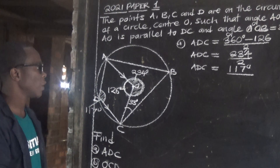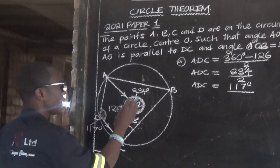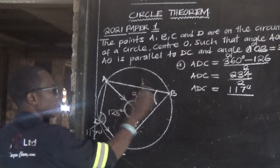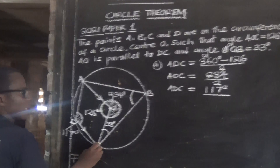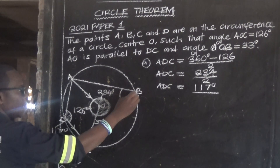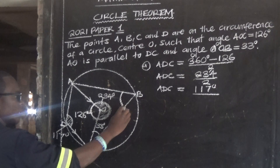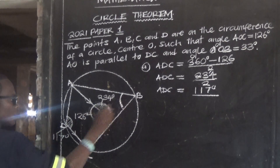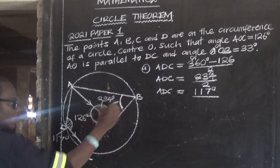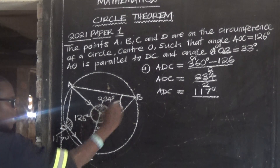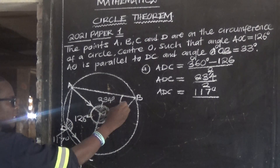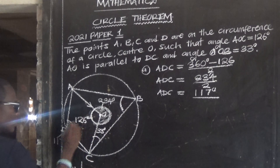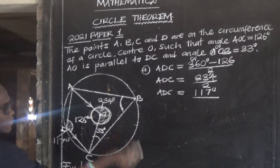Alternatively, you can first find angle ABC. Since we know that angle D and angle B are opposite angles of the cyclic quadrilateral, these angles are supplementary — they add up to 180 degrees.